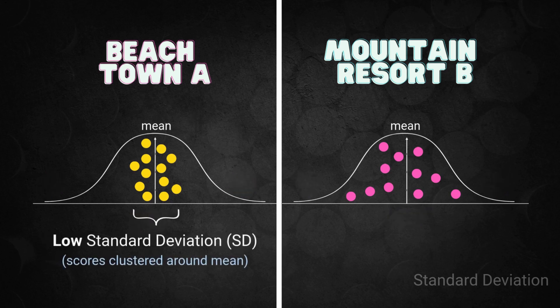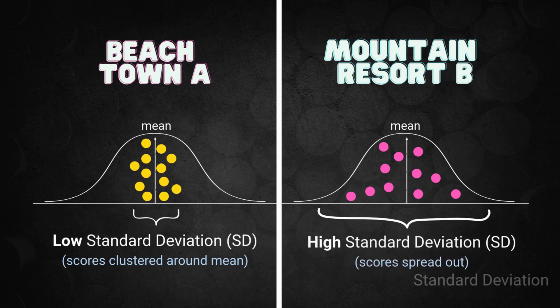Beach Town A has a low standard deviation. Temperatures stay close to 80 degrees. Mountain Resort B has a high standard deviation. The temps are all over the place. And that's why standard deviation matters. It tells us how reliable, consistent, or unpredictable your average really is.